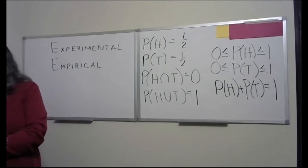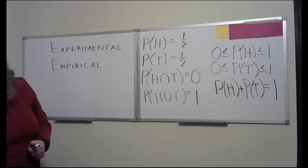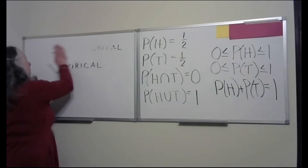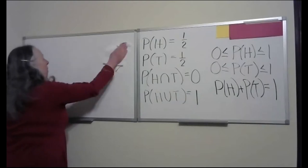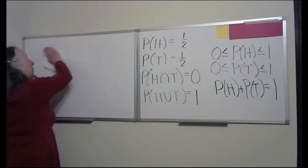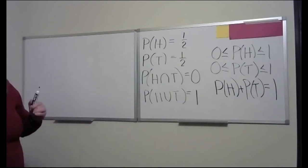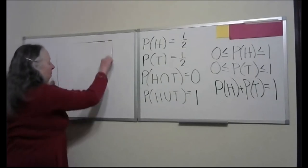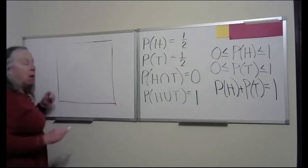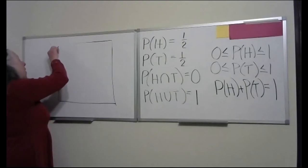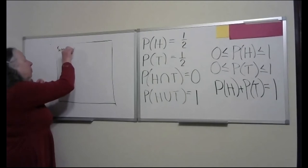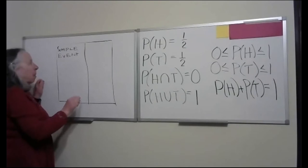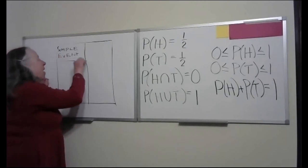Sometimes you're asked to create a probability distribution table. When you're asked to do that, the table lists the simple events, and associated with each of the simple events is a probability.